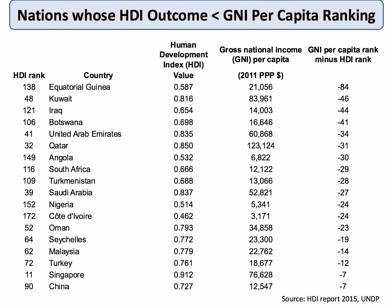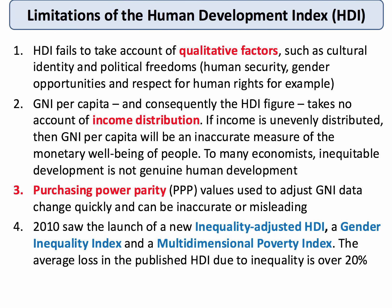On the other side are countries whose HDI ranking is worse than their GNI per capita ranking. The most significant outlier is Equatorial Guinea, with a PPP-adjusted per capita income of over $21,000 yet an HDI of only 0.587, placing them 138th. Resource-rich countries such as Kuwait, Iraq, UAE, Qatar, Angola, Saudi Arabia, Nigeria, and Ivory Coast tend to have human development outcomes significantly worse than their per capita incomes would imply, raising important questions about whether economic growth actually feeds through to improvements in education and health.